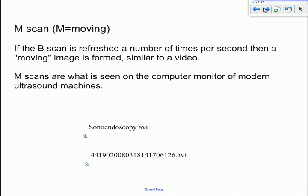And then there's an M scan, where M stands for moving. So, effectively, what we do is we take a B scan every tenth of a second or whatever, and we refresh it like a TV picture, which effectively gives us a moving image, just like a film. So many A scans making up a B scan, and a few B scans a second making up what we call an M scan.